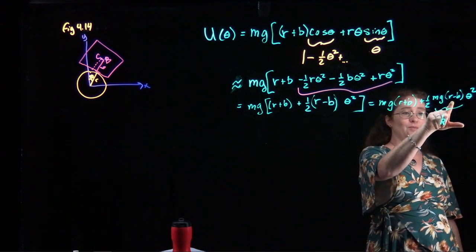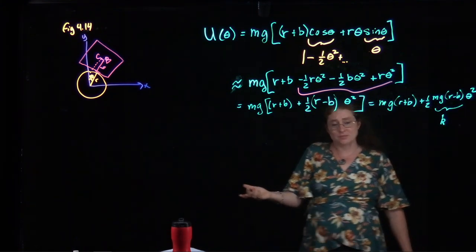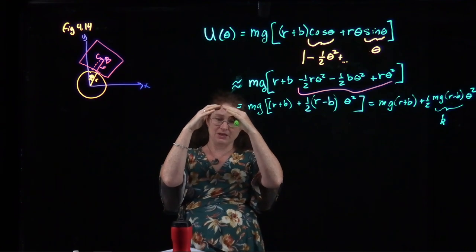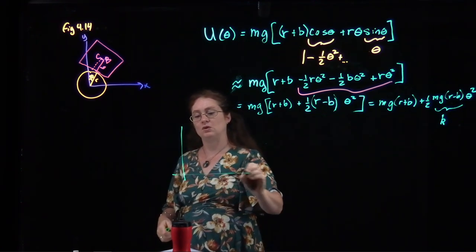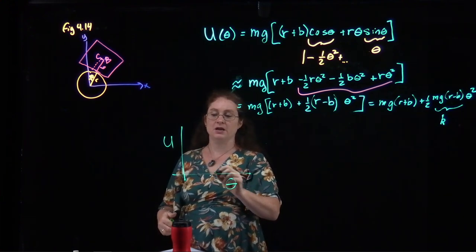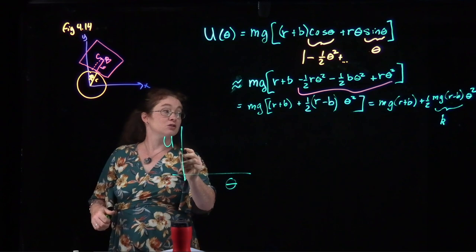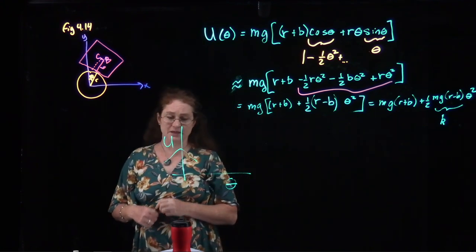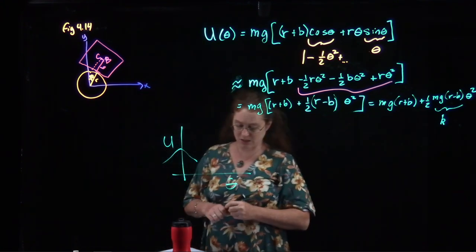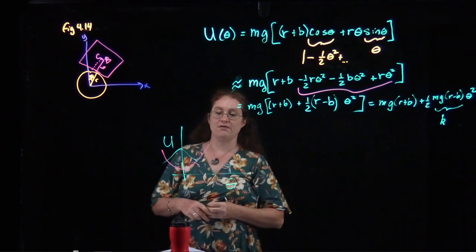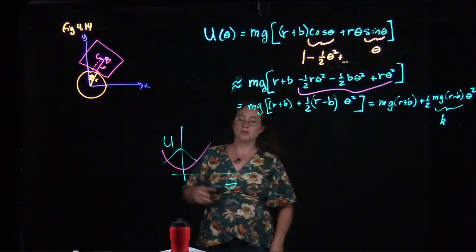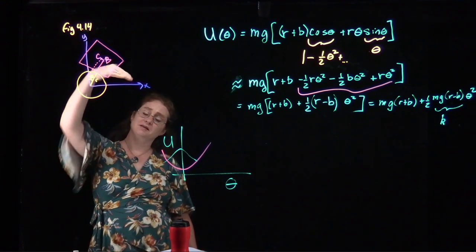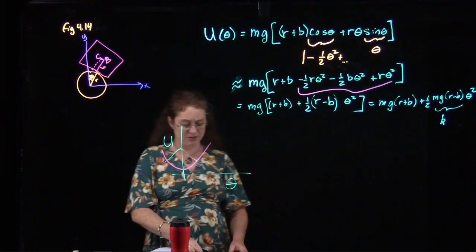The system is stable if r is greater than b. If r is less than b, then I have a negative spring constant and the equilibrium point is unstable. If r is greater than b, when I plot u as a function of theta I have a stable minimum, and the box will oscillate back and forth on that cylinder. If r is less than b, I have an inverted shape — a local maximum — and it's unstable.